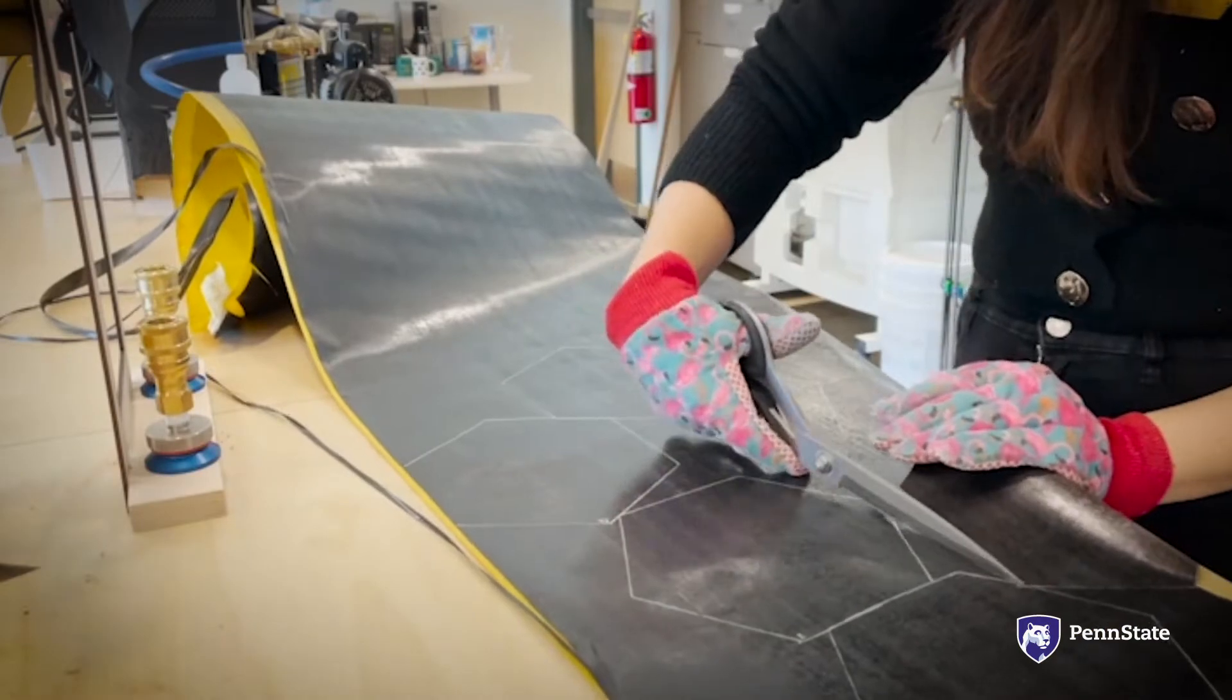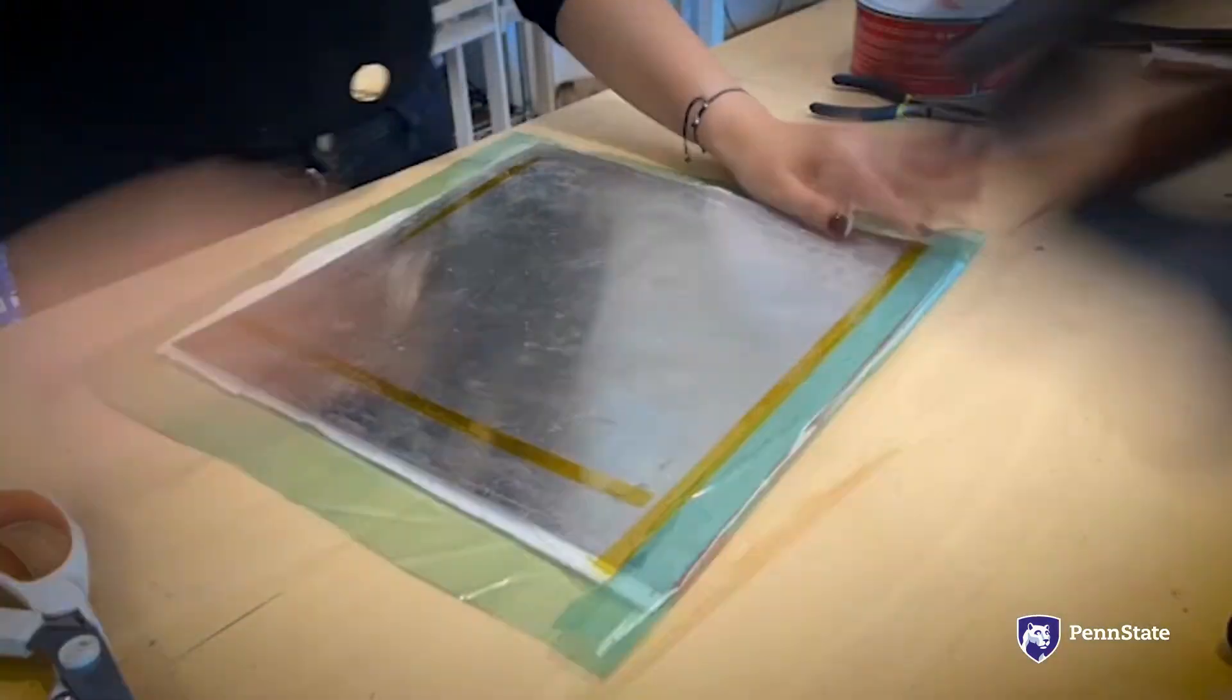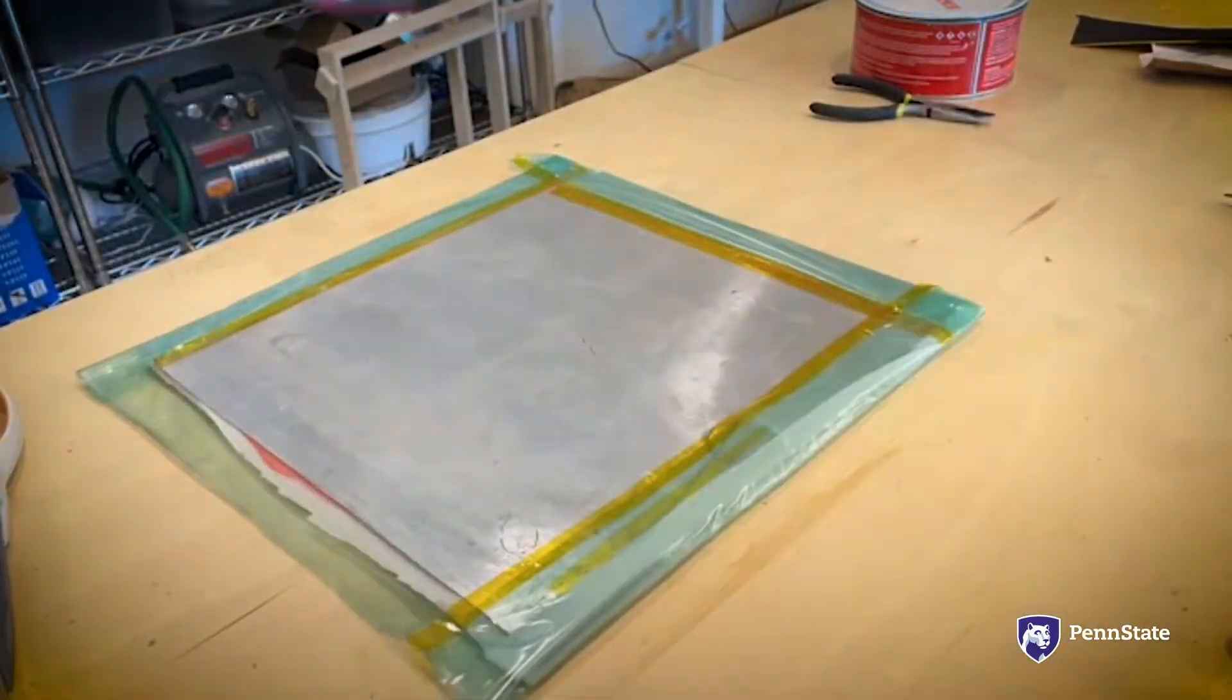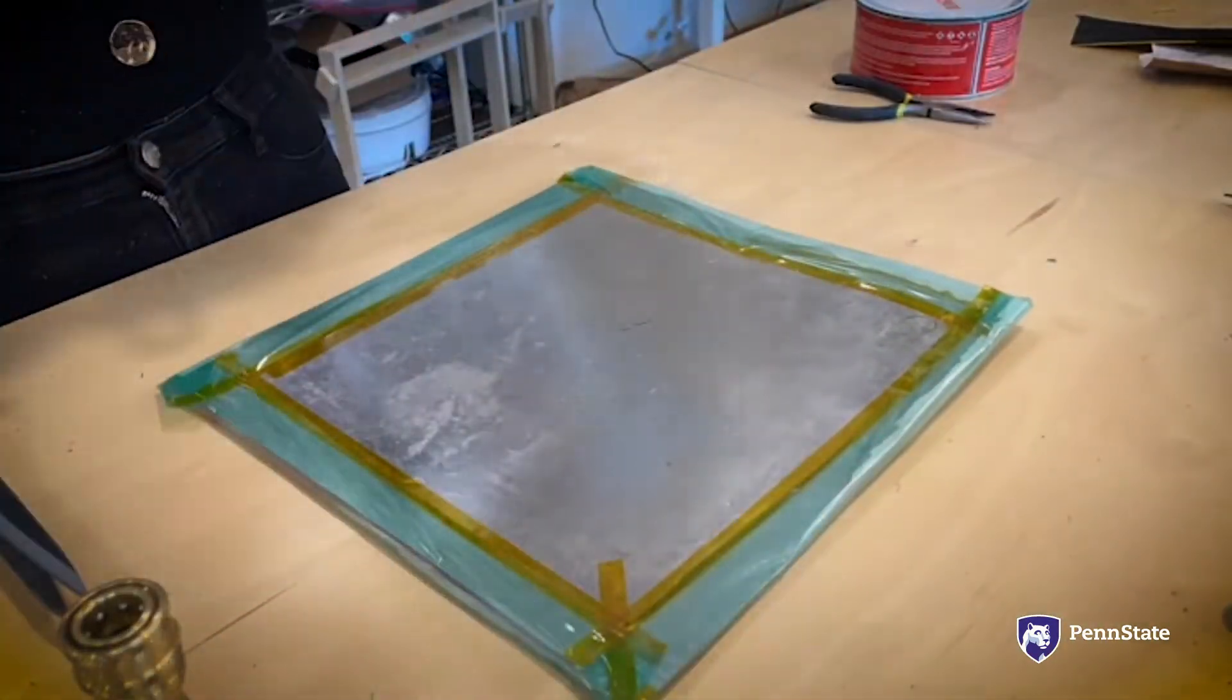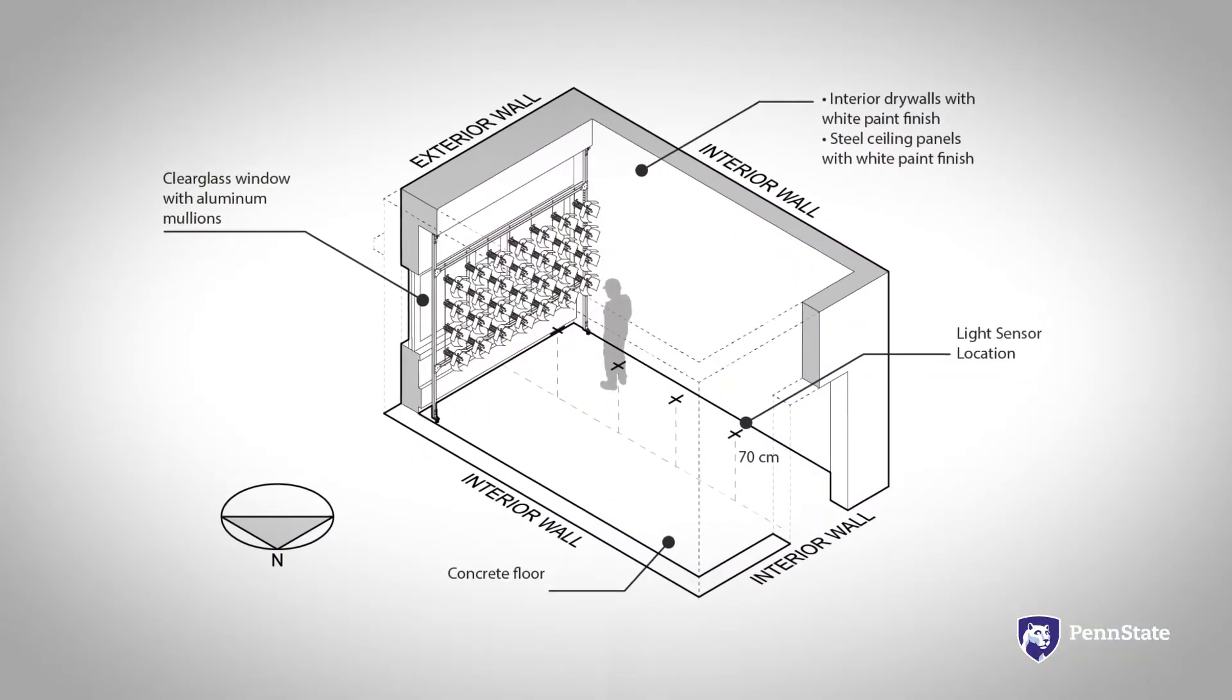The fabrication process of the screen involved layering pre-preg carbon fiber sheets and curing them under vacuum. The differential thermal stresses in the process leads to bi-stable behavior.